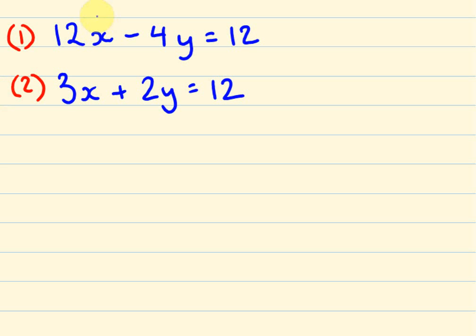Now, again, simultaneous equations are where we use two algebraic equations, these are the ones with the x's and y's, to try and solve these unknown variables here, either the x's or the y's.